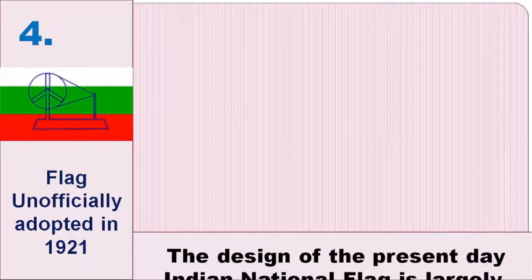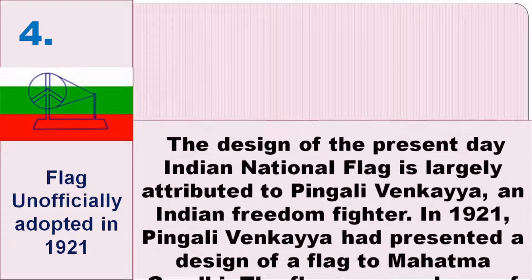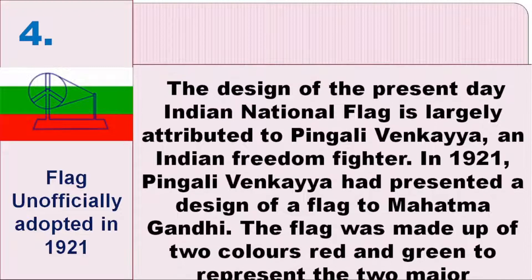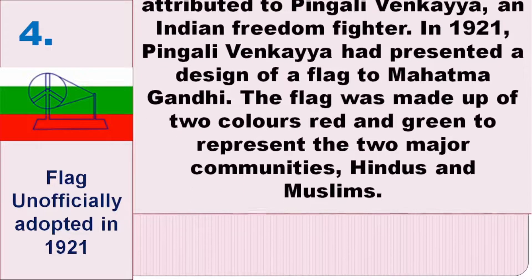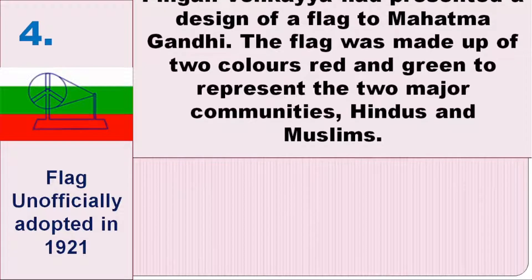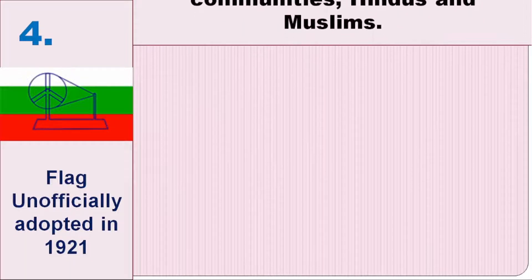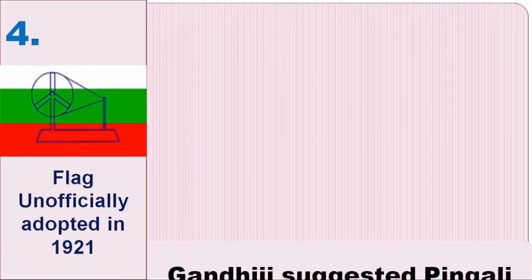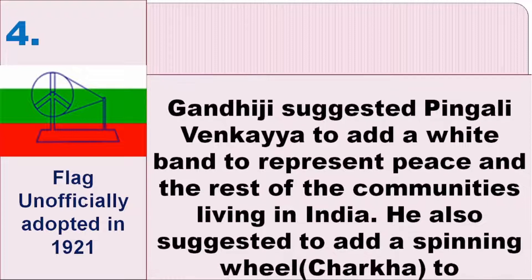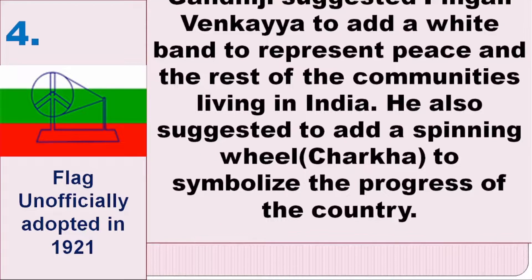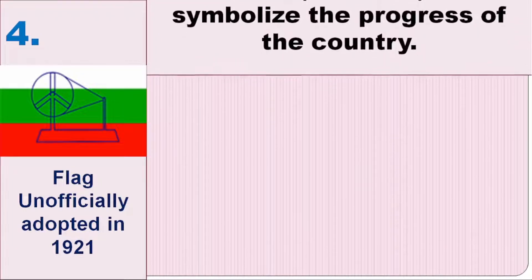In the fourth phase, the design of the present-day Indian national flag is largely attributed to Pingali Venkayya, an Indian freedom fighter. In 1921, Pingali Venkayya presented a design of a flag to Mahatma Gandhi. The flag was made up of two colors, red and green, to represent the two major communities, Hindus and Muslims. Gandhiji suggested Pingali Venkayya add a white band to represent peace and the rest of the communities living in India, and also suggested adding a spinning wheel, Charkha, to symbolize the progress of the country.